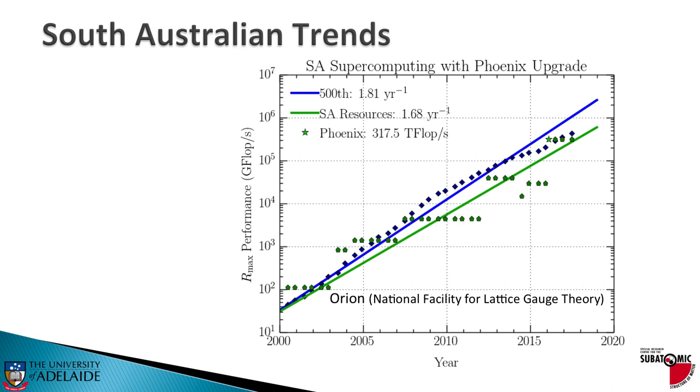It was complemented by Aquila. So again, South Australia had supercomputers in the top 500.